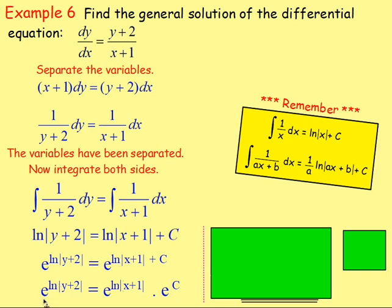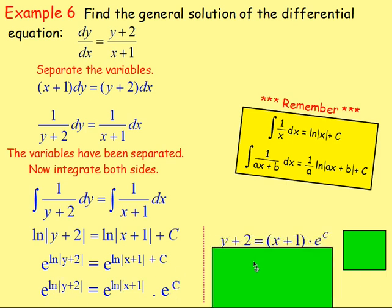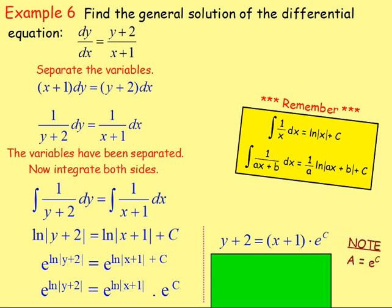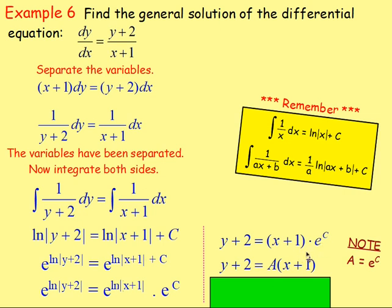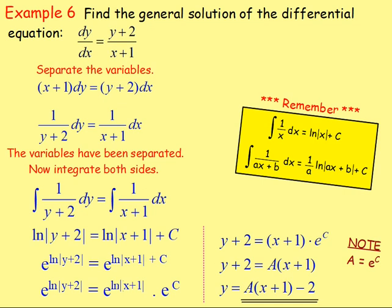e and ln are the inverse of one another, so they will cancel out, leaving you with y plus 2. That will equal x plus 1, and you're multiplying that by e to the power of c. Remember, you don't leave it as e to the power of c — you just bring in another letter there, and you generally let a equal e to the power of c. Therefore, y plus 2 equals a times (x plus 1). Subtract 2 from both sides to get y on its own. So that will be your answer.